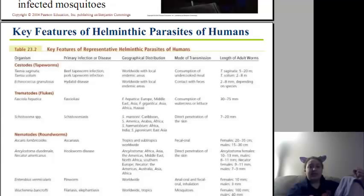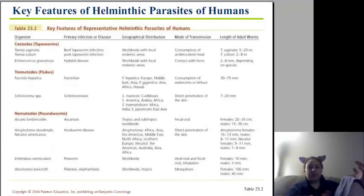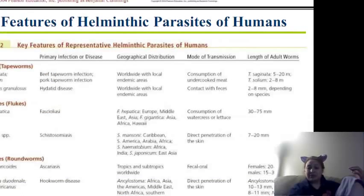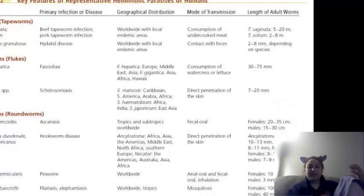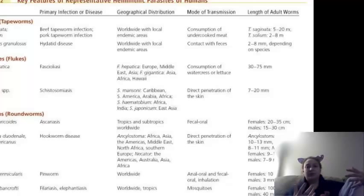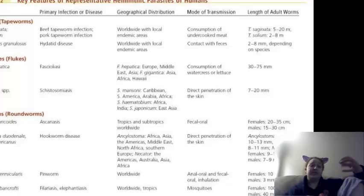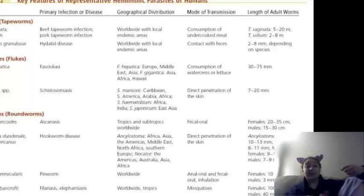Key features of helminthic parasites of humans — there's a huge, wonderful table. Take down the table; I'm enlarging it so you can see it and use it on your lab assessment. When I give you five individuals with diseases, these would be great to add to your table that you're turning in Friday. I hope you all had a good time and I will talk to you all later.